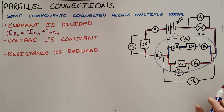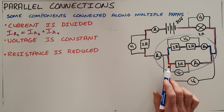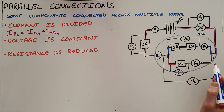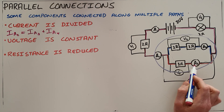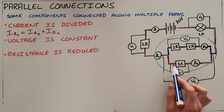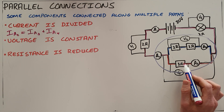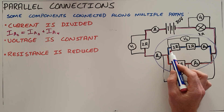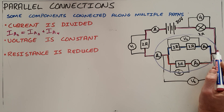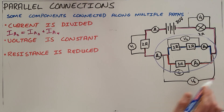The second rule is that voltage is constant. This is because of the relationship between current and voltage. The current will try to follow the path of least resistance. On the path with 3 ohms of resistance, more current will flow, which means the voltage will be higher, but on the other path, the current is lower while the resistance is higher.